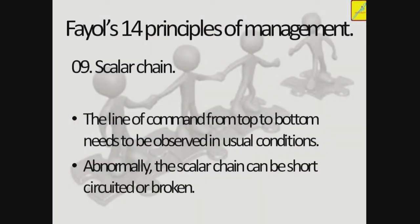9. Scalar Chain: The line of command from top to bottom needs to be observed in usual conditions. Abnormally, the scalar chain can be short-circuited or broken, so that somebody in between may not lose the information from top to bottom or bottom to top.